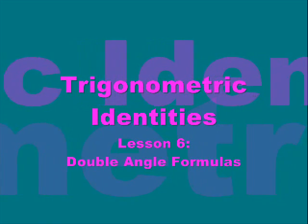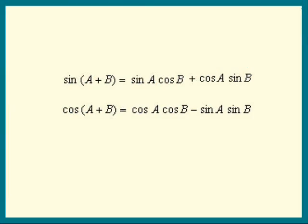Welcome to lesson 6 on trig identities. In lessons 4 and 5, we learned the identities for sine and cosine of a sum. Two useful double angle identities follow from those. Here they are.